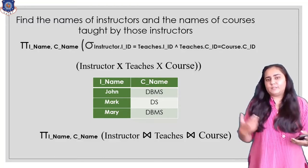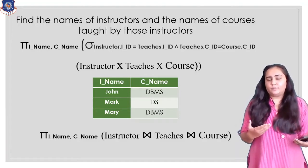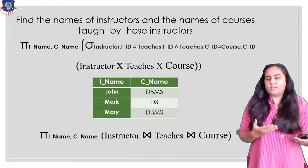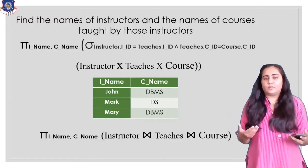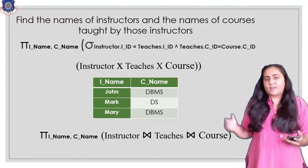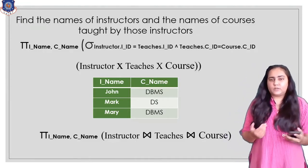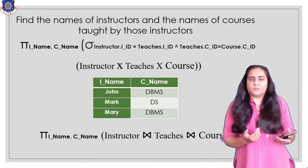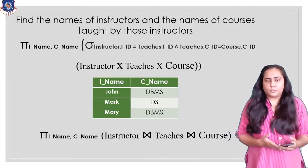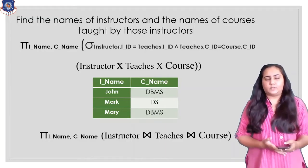What happens here is that instructor and teachers share a common column i_id. Because that column is common between instructor and teachers, it is matched automatically without writing the sigma condition. Similarly, teachers and course share a common column c_id, which is also matched automatically. The pi projection condition remains as it is.